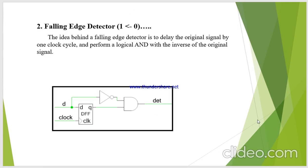Falling edge detector — it will detect when there is a transition from 1 to 0. The idea behind a falling edge detector is to delay the original signal by one clock cycle and perform the logical AND with the inverse of the original signal. We all know the D flip-flop is used to delay the input signal by one clock cycle, and that delayed signal is given as one input.